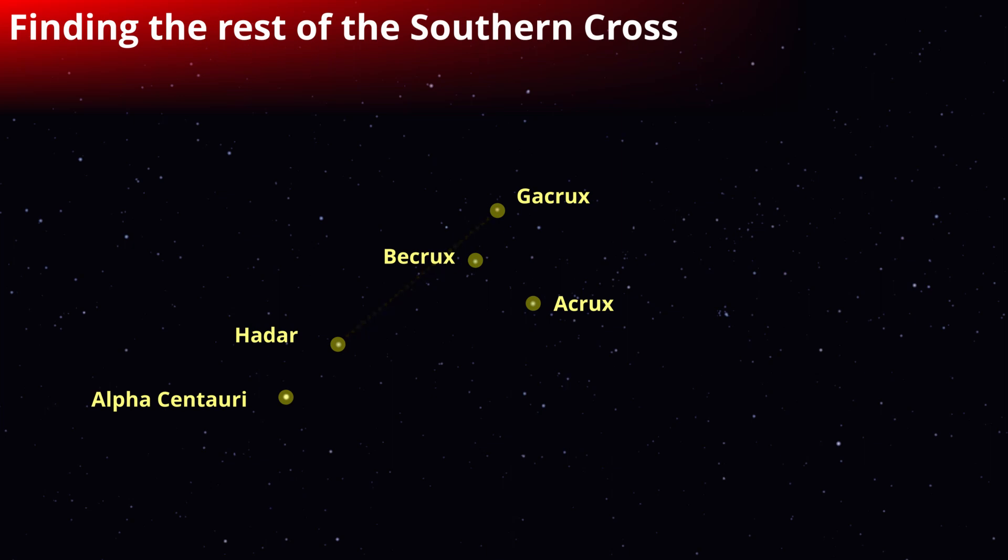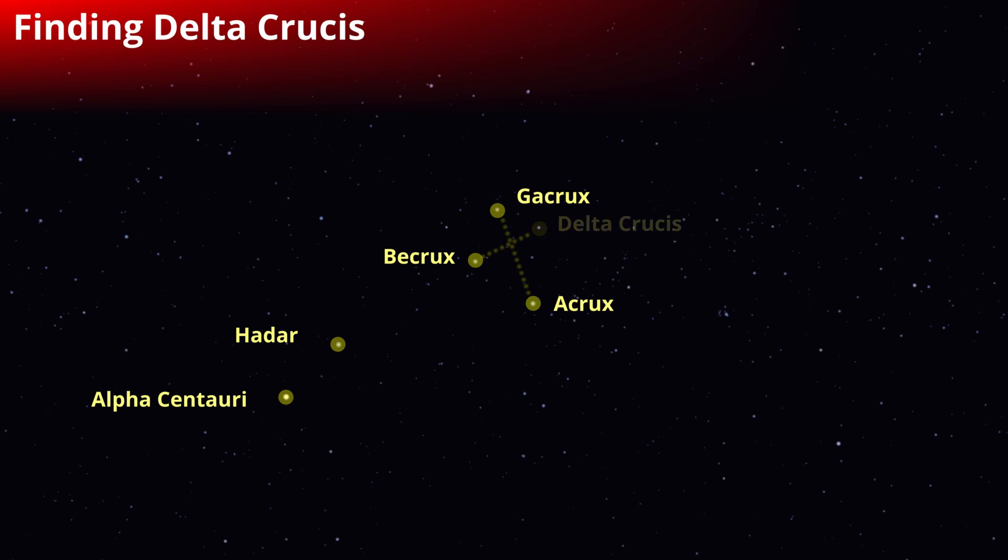Now imagine a line from Gacrux to A-Crux. That's the major axis of the Southern Cross. To find the final star, just imagine drawing the minor axis from the star B-Crux to cross the line drawn from Gacrux to A-Crux. Beyond that line, you'll find the slightly dimmer star Delta Crucis.